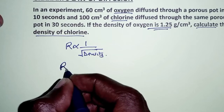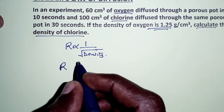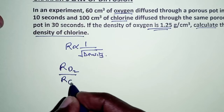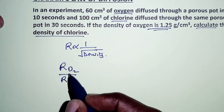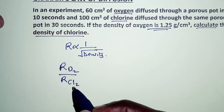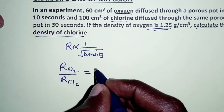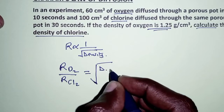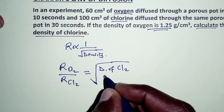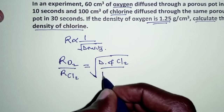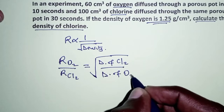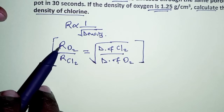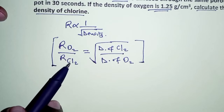If we take the rate of diffusion of oxygen divided by the rate of diffusion of chlorine gas — that is the ratio of their rates of diffusion — this should be equivalent to the square root of the density of chlorine gas over the density of oxygen gas.